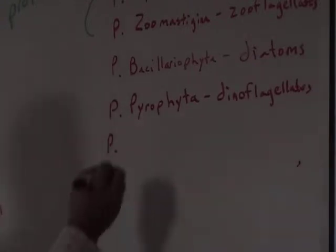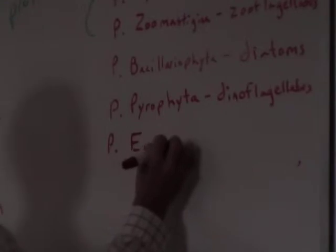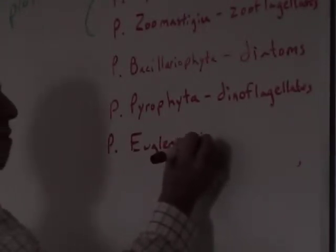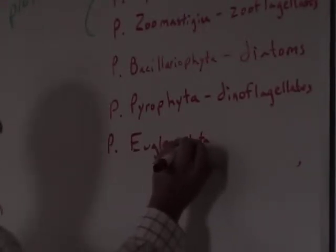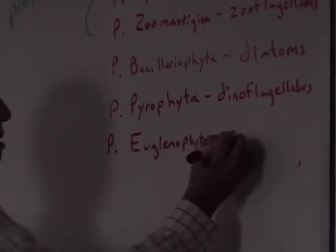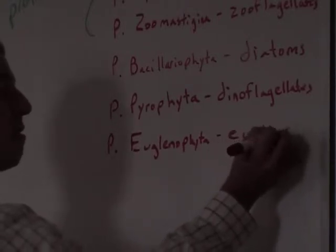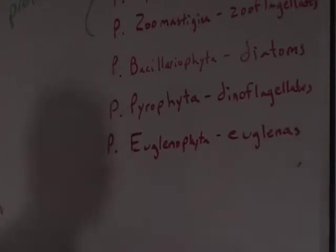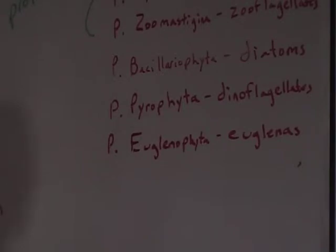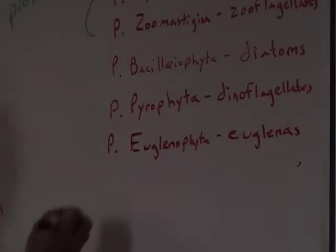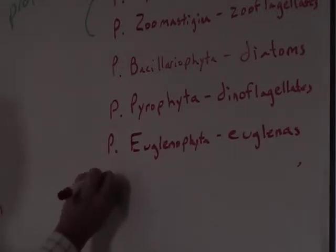Phylum Euglenophyta — euglenas. An example of a euglena is a euglena. Euglenas are the little green things that swim around — we have them in the lab. They've got the red eye spot. Phylum Chrysofita — yellow, green, or golden brown algae.